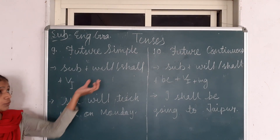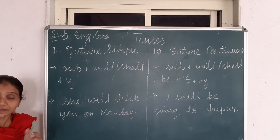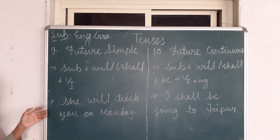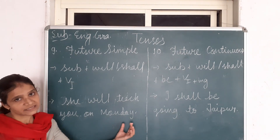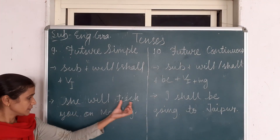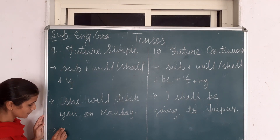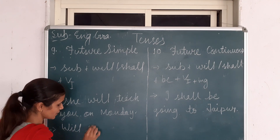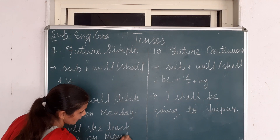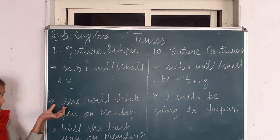With unsure actions, when the subject is I or we, we use 'shall.' Example: 'She will teach you on Monday.' Negative: 'She will not teach you on Monday.' For interrogative, we use 'will' at the start, then subject, then main verb, then the remaining part — with a question mark at the end.